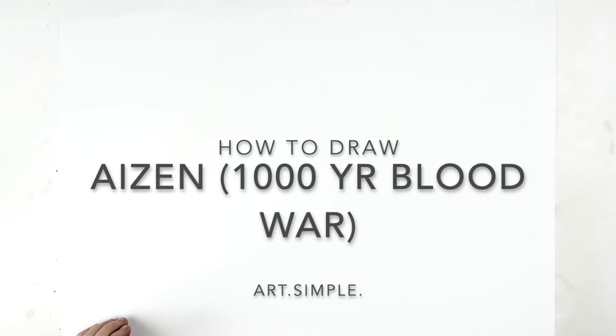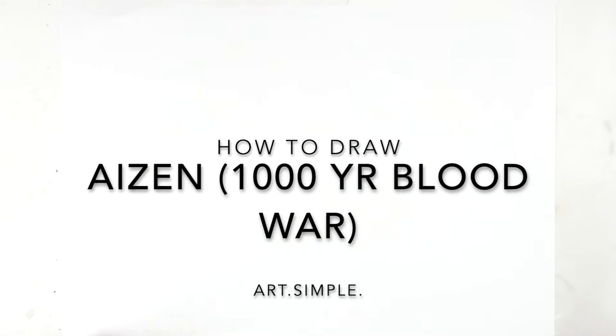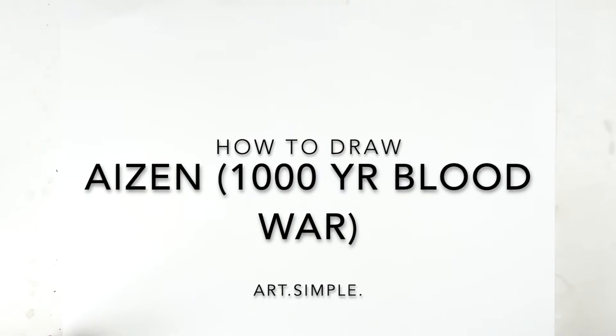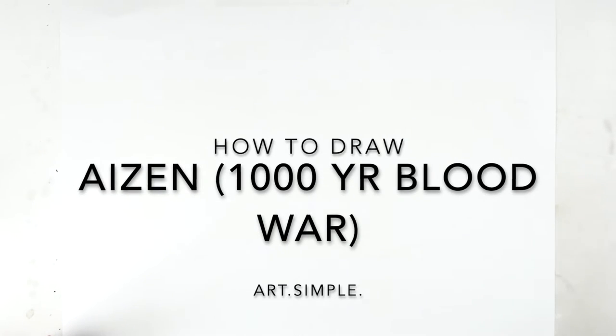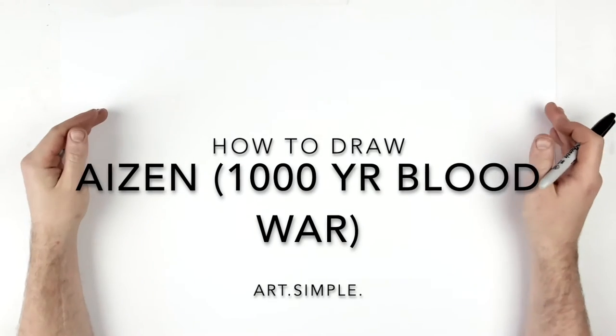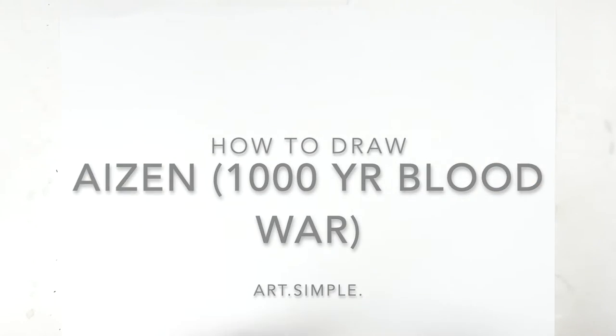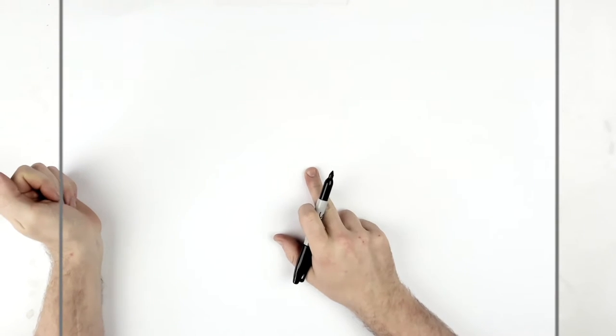What's up guys, welcome back to another drawing tutorial. Today we have Aizen from the Thousand Year Blood War, the version where he has the eye patch over his head. I'm on a landscape page, use a pencil and eraser. Hit pause if I go too fast. The center point of my page is about here. His head is in the top half of the page, so his chin is probably right in the middle point.